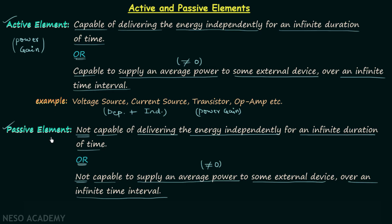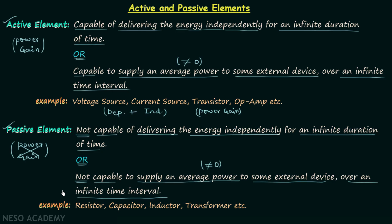Passive elements are not able to provide power gain to the circuit or to an element in the circuit. The first example is a resistor — it does not provide energy to the circuit. The second example is a capacitor; a capacitor stores energy but does not provide it independently for an infinite duration of time.